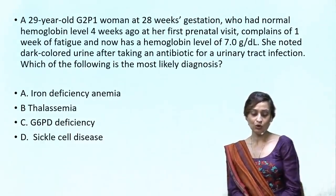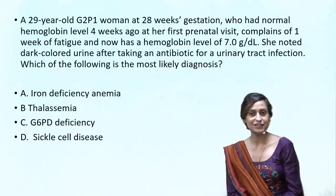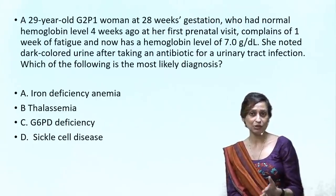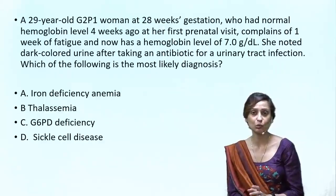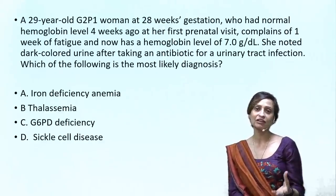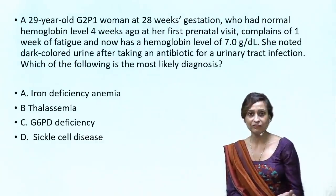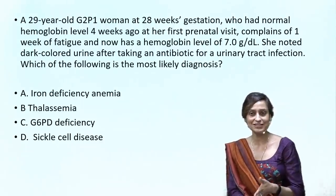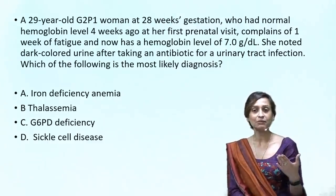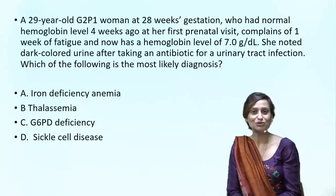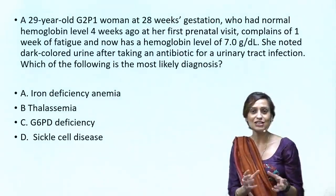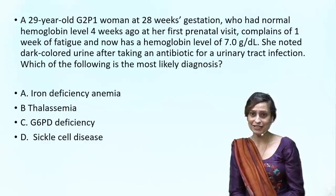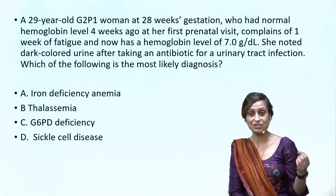Why is iron deficiency anemia unlikely? After physiological anemia, IDA is the second most common cause of anemia in pregnant women. However, this patient was absolutely well up until four weeks back — even at 24 weeks when she had her first antenatal visit with normal reports. Iron deficiency anemia would not suddenly drop from normal values to 7 gram percent.